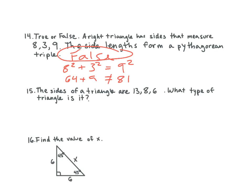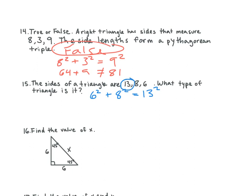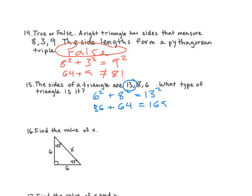Number 15 — the sides of a triangle are 6, 8, and 13. What type of triangle is it? Put the smallest ones first. 36 plus 64 equals 100. How did we know 13 was going to be our c? Because it's the biggest one. So 36 plus 64 is 100, and 100 is less than 169, so c squared is bigger — it's an obtuse triangle.